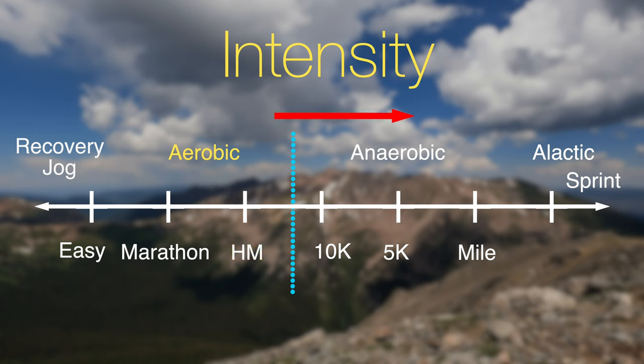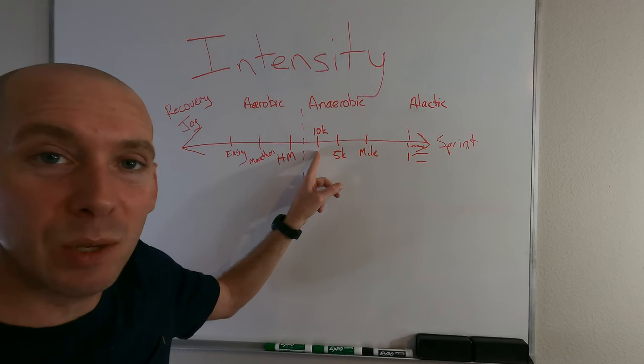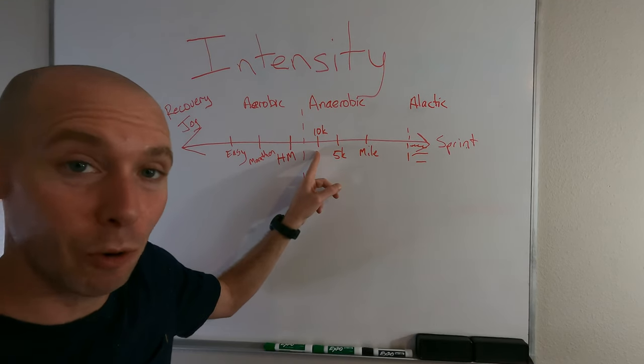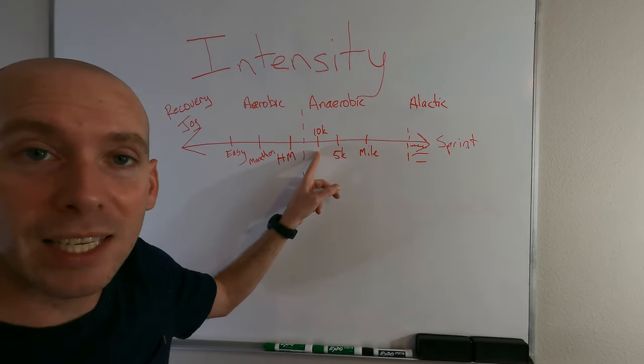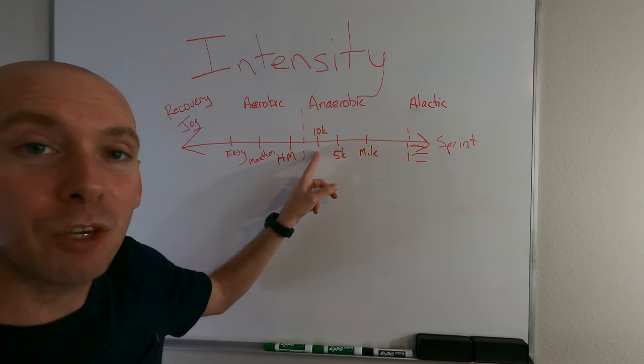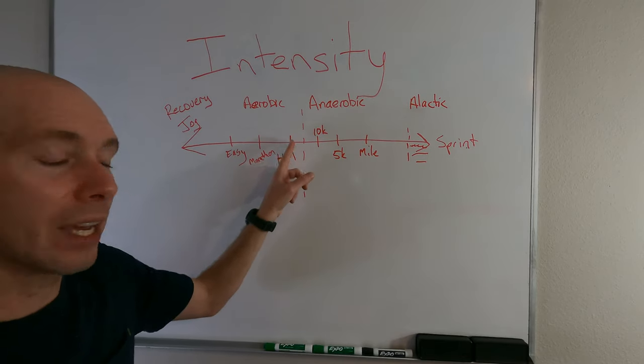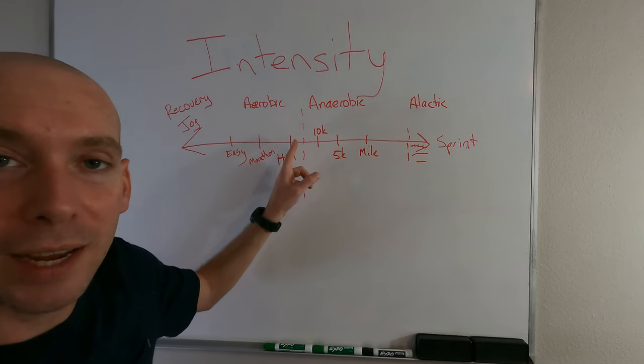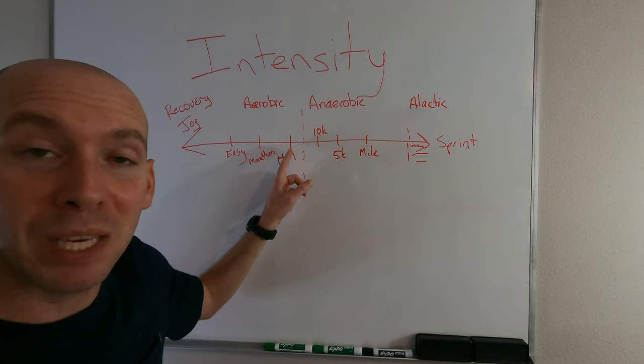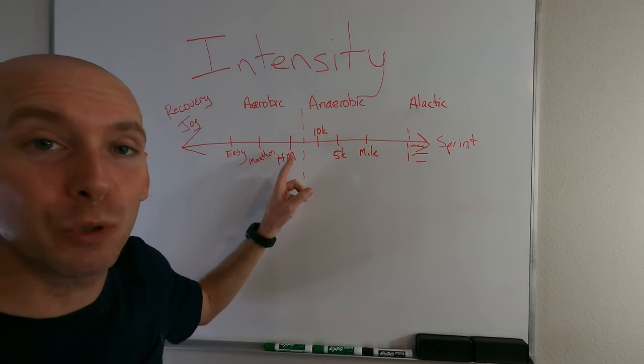Now we cross this line. Anything on the right side of this spectrum is going to be anaerobic, so we have your 10K pace. For most runners, the 10K is an anaerobic event. If your 10K time is about 55 minutes or faster, the 10K is anaerobic for you. If your 10K is around an hour or slower, then you're running it a little bit on the aerobic side, and that is actually a good thing because it means you have a lot of room for improvement.